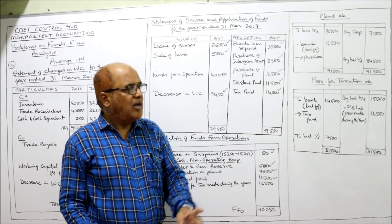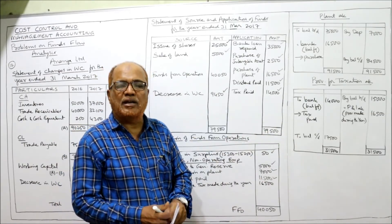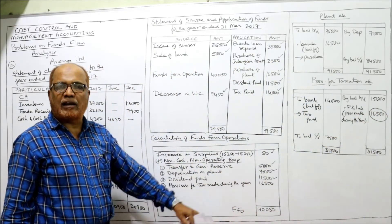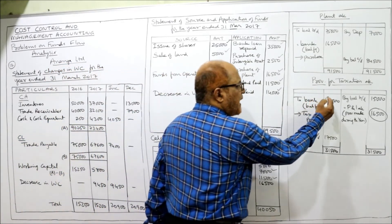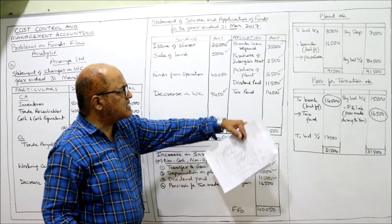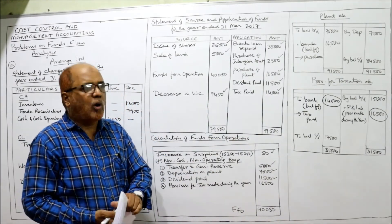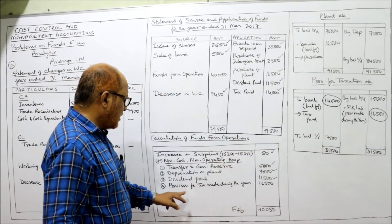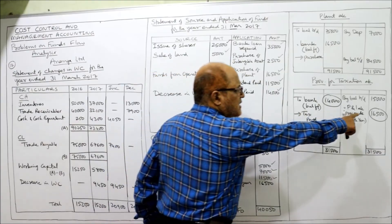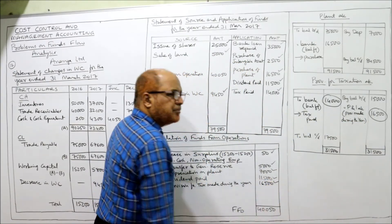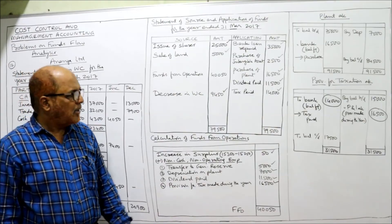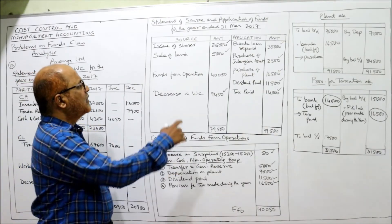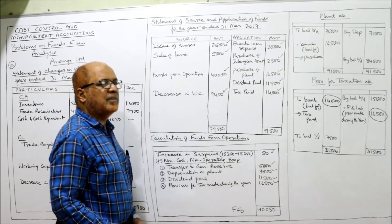From this provision for taxation account, two items are taken: the provision made during the year of 16,500 is added back to profit for calculating funds from operation, and the income tax paid of 14,000 is taken as an application of funds. Opening and closing balances are not taken separately. Now taking the total: funds from operation is 40,050. All items have been accounted for.